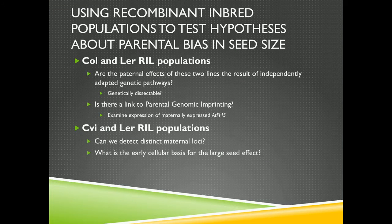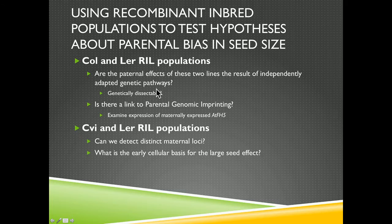So to look at this, I'm turning to recombinant inbred lines and using them as experimental populations. There's the advantage that we can map alleles, but then I can also use them experimentally to directly test hypotheses. Are the parental effects of these two lines a result of independently adapted genetic pathways? In other words, I should be able to genetically dissect them, and if they're separate pathways, I should be able to add them together and maybe get potentially larger seeds.